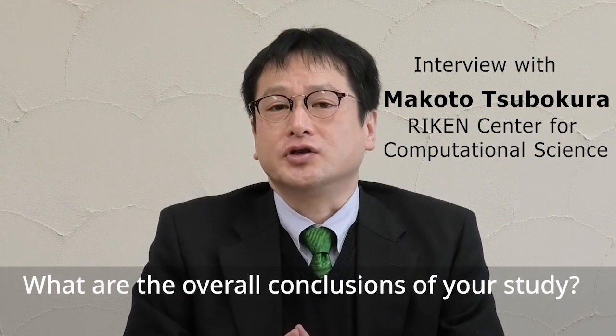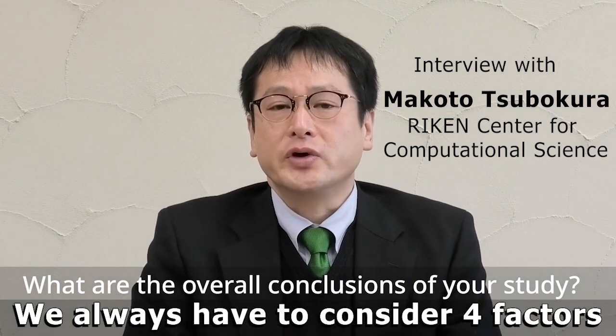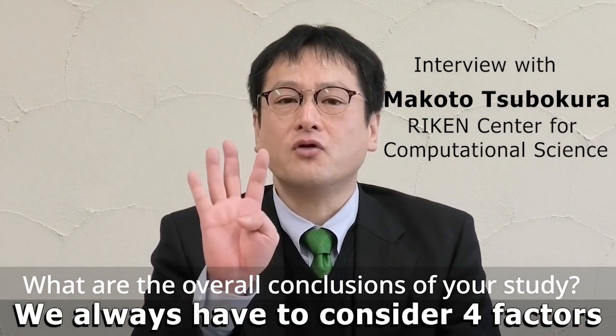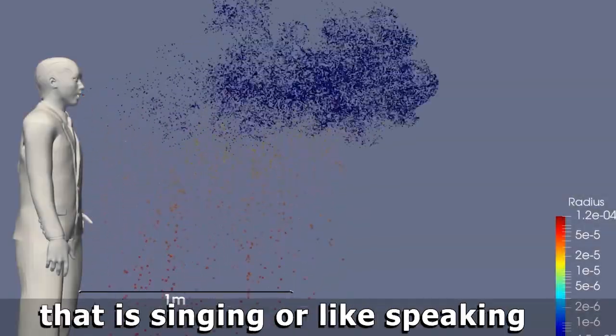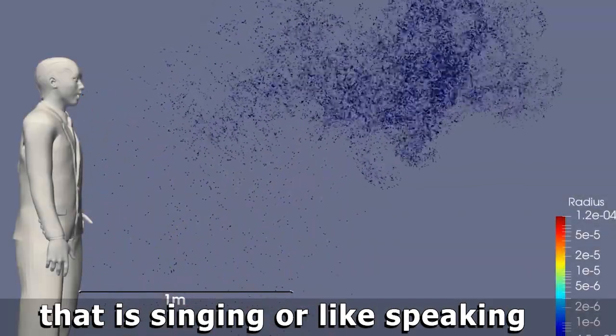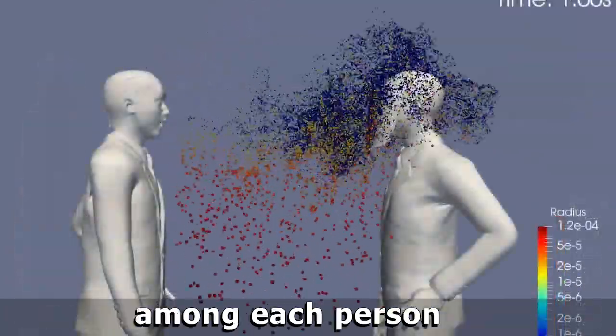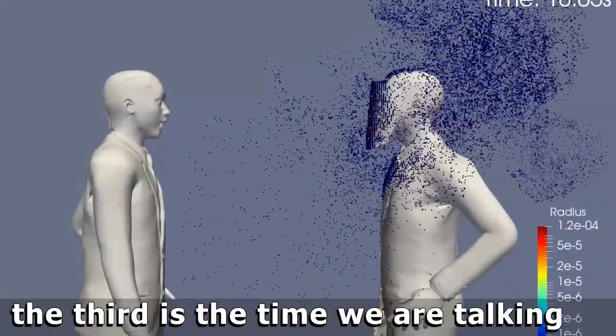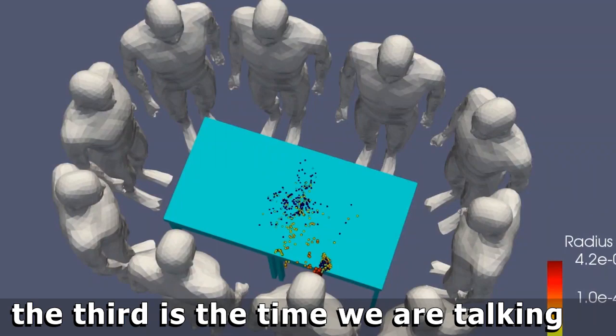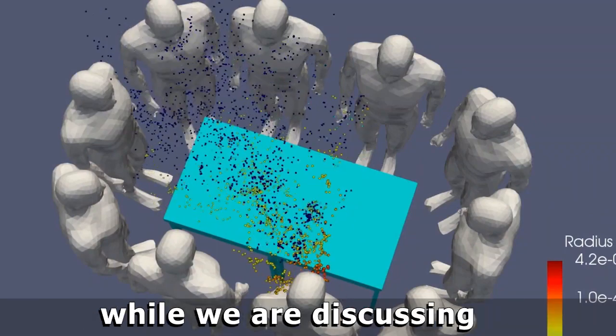The overall conclusion in our simulation is we always have to consider four factors. One is the behavior, like singing or speaking. The second is the distance among each person. The third is the time that we are talking or discussing among each person.